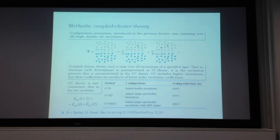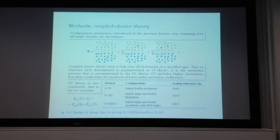Size inconsistency means that if we put two molecules together, even if they are not interacting, the total energy of the system is in general smaller than the sum of the energies of the two original systems.